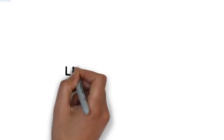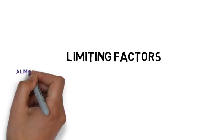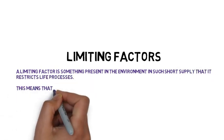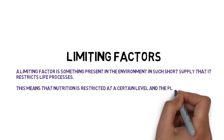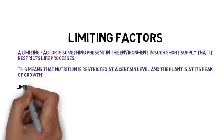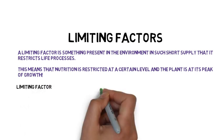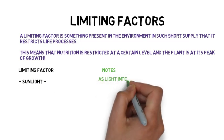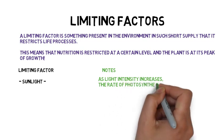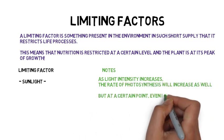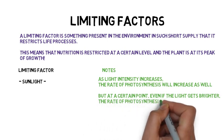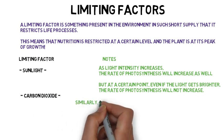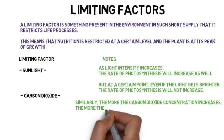Limiting factors. A limiting factor is something present in the environment in such short supply that it restricts life processes. This means that nutrition is restricted at a certain level and that the plant is at its peak of growth. Limiting factors include: sunlight — as light intensity increases, the rate of photosynthesis will increase as well, but at a certain point, even if the light gets brighter, the rate of photosynthesis will not increase. Carbon dioxide — similarly, the more the carbon dioxide concentration increases, the more the photosynthesis rate increases, until a maximum is reached.